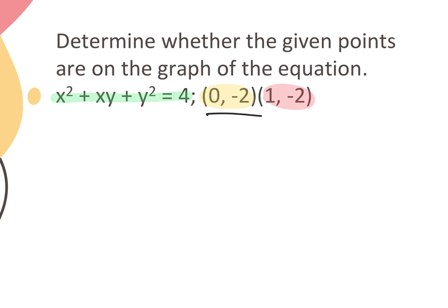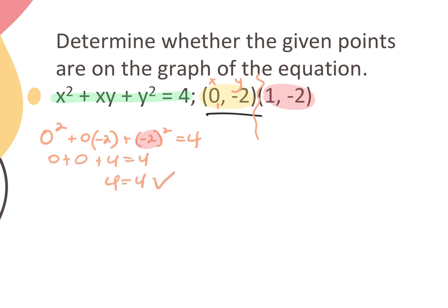Every graph is formed by a set of points. If the question is: does this point lie on the graph, you plug the coordinates in. If both sides of the equation balance, the answer is yes. For example, testing (0, -2): plug zero for x and negative two for y everywhere, using parentheses so (-2)² becomes positive 4. We get 0 + 0 + 4, and 4 equals 4 — yes, that point is on the graph.